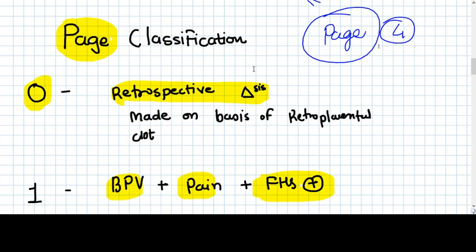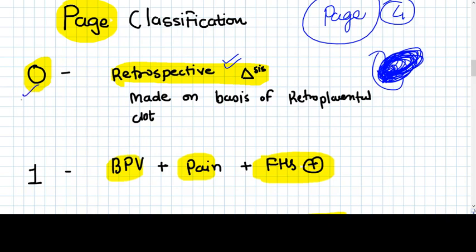What is the zero? Zero means retrospective diagnosis. That means the delivery happens. Already third stage has been done. And when you see the placenta which came out from the uterus, you see a very large blood clot behind this. So it's a concealed type of abruptio placenta. You can only diagnose after delivery. So retrospective diagnosis is made on basis of retroplacental clot. That is zero.